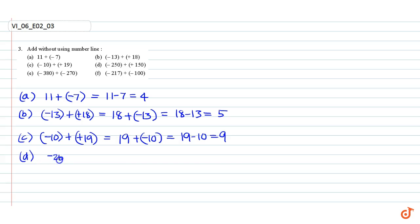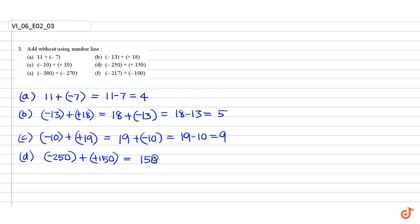Part d: minus 250 plus 150. Rearranging the numbers we get 150 minus 250, which is equal to minus 100.